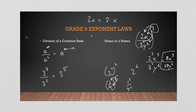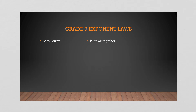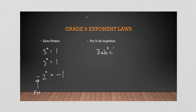This is all still repetition from grade 9. Zero power: 5⁰ = 1, 3⁰ = 1. For negative two to the zero with no brackets — the negative stays, so we get negative one. Now here's a combined operation: we have (3ab²c⁴) over (9a²bc²) all to the power of three.